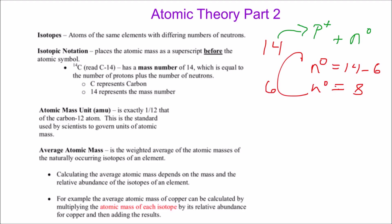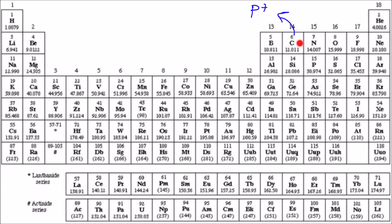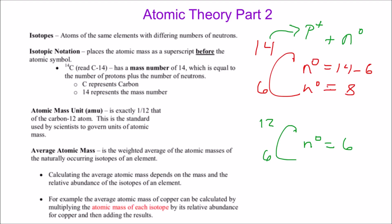For a carbon-12 atom, the mass number is 12 and the atomic number is always six, meaning there are six neutrons. This is the standard carbon atom from the periodic table. Since an amu is one-twelfth of a carbon-12 atom, and 12 divided by 12 equals 1, an amu is essentially the number one.